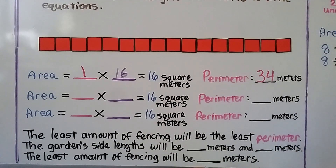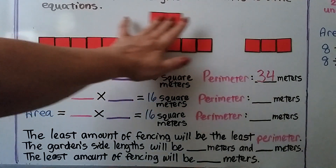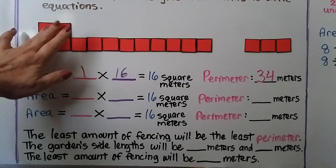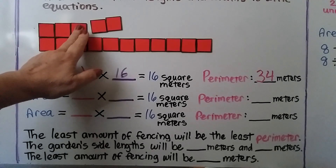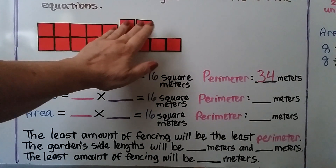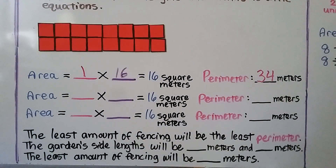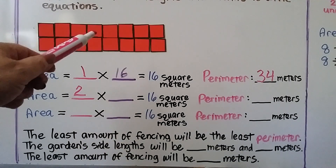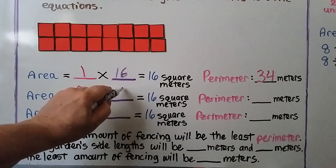Now let's try a different rectangle with a side length of two. We move the tiles to make a nice even rectangle with no gaps or overlaps. So we have a side length of 2 and a width of 8 — and 2 times 8 equals 16.